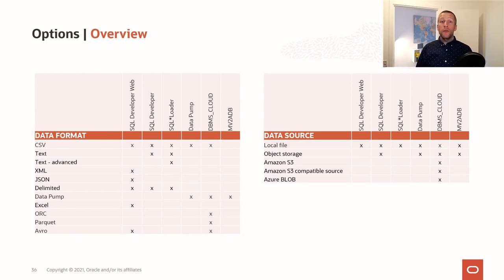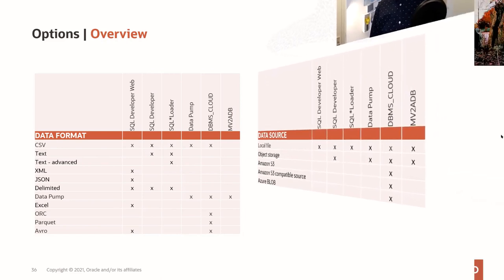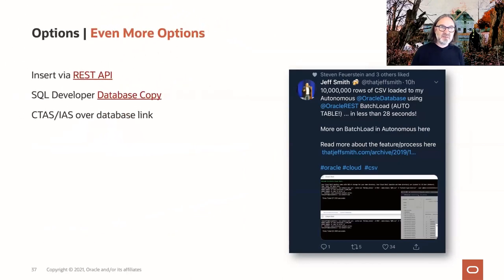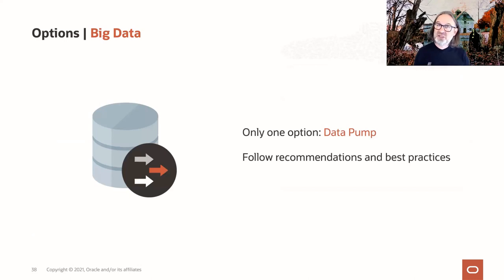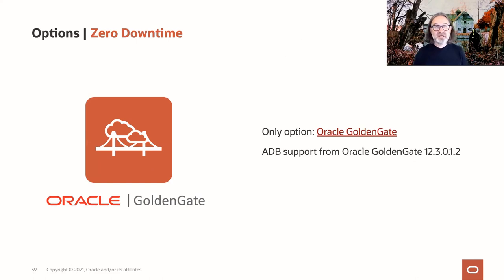For your reference, we've included an overview matrix listing all the options we used to load data into the Autonomous Database, along with information about features available with each tool. There are even more options — for instance, Insert via REST API, as Jeff Smith showed in his blog post loading 10 million rows in less than half a minute. We could also use SQL Developer Database Copy, a cool new feature, or old-fashioned techniques such as database links, create table as select, or insert-append-select statements. All that would work. But if you have a lot of data, Data Pump is really the only option. Please follow our recommendations and best practices, and if you want zero or near-zero downtime, then there's no way around GoldenGate.